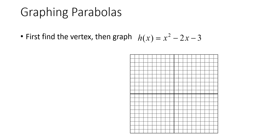If we remember, the formula for finding a vertex is negative b over 2a. So we can identify our a, b, and c from the quadratic. a is 1, it's the number before the x squared. b is negative 2. c is negative 3.